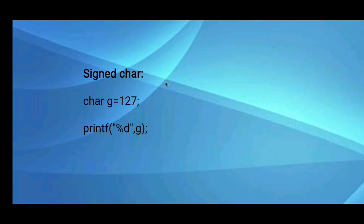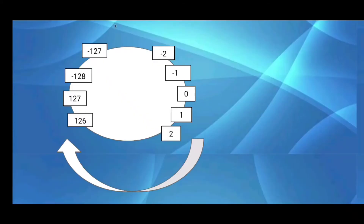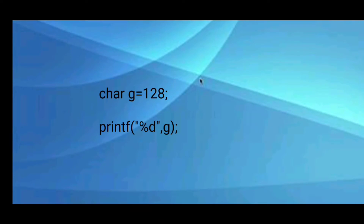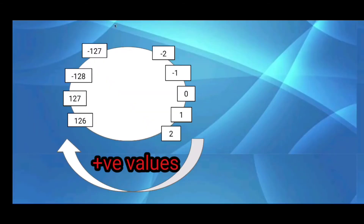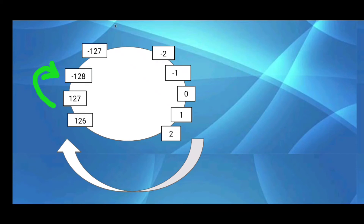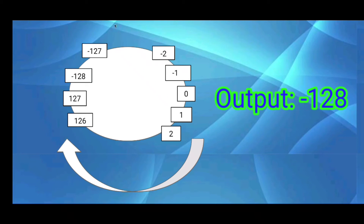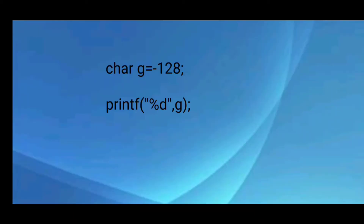Inside a char variable, we can store up to 127 as a positive value, so storing 127 will print 127 to the output screen. Here I am storing the decimal value 128 into a character variable. In positive values we can store up to 127, so storing 128 causes it to wrap around — this will print minus 128 to the output screen.